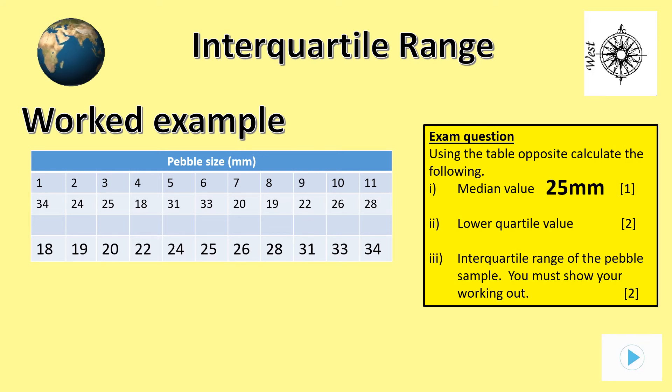The next question is to work out the lower quartile value. We will be using the first half of all the numbers rank ordered below the median value: 18, 19, 20, 22 and 24. This gives a lower quartile value of 20 mm.